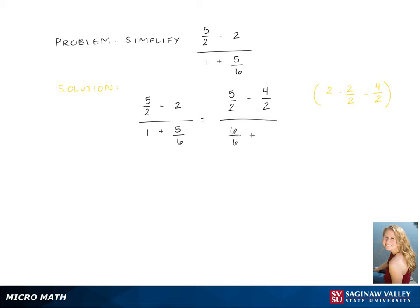We do the same thing with the denominator because we want 1 to have the denominator of 6. So we take 1 multiplied by 6 over 6 which gives us 6 over 6. Now we can simplify.